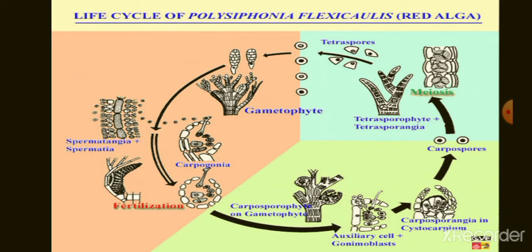The egg develops in the basal swollen part of the carpogonium. The fertilized carpogonium produces many filaments called gonimoblast filaments. The tip cell of each gonimoblast filament functions as a carposporangium, which produces a single carpospore. The whole structure is known as carposporophyte or cystocarp.